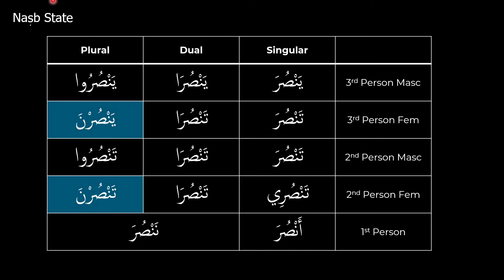What does the nasib state look like when we take it through all the different conjugations? As we said, the ending is going to take a fatha rather than a dhamma, so it becomes yansura. When it's in the dual and plural conjugation, the noon on the end will be dropped — so rather than being yansuraani, it becomes yansura, and rather than yansuruna, it becomes yansuru. Then we have tensura, tensura, and yansuruna.